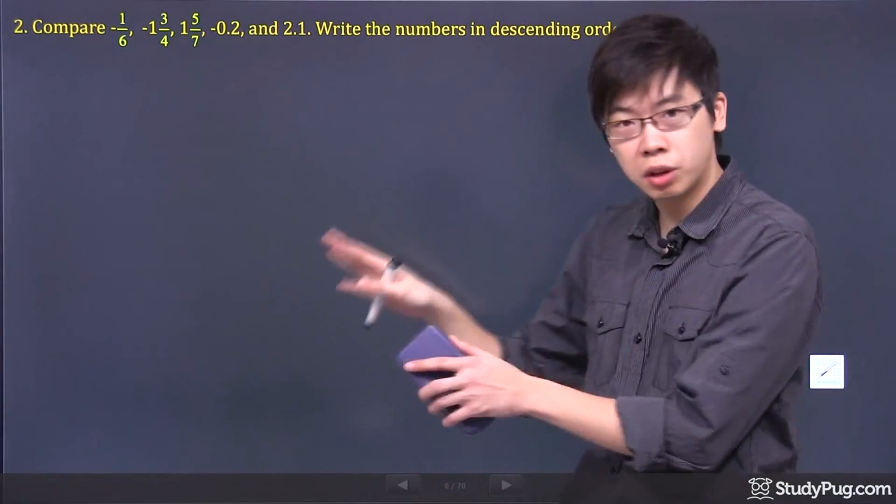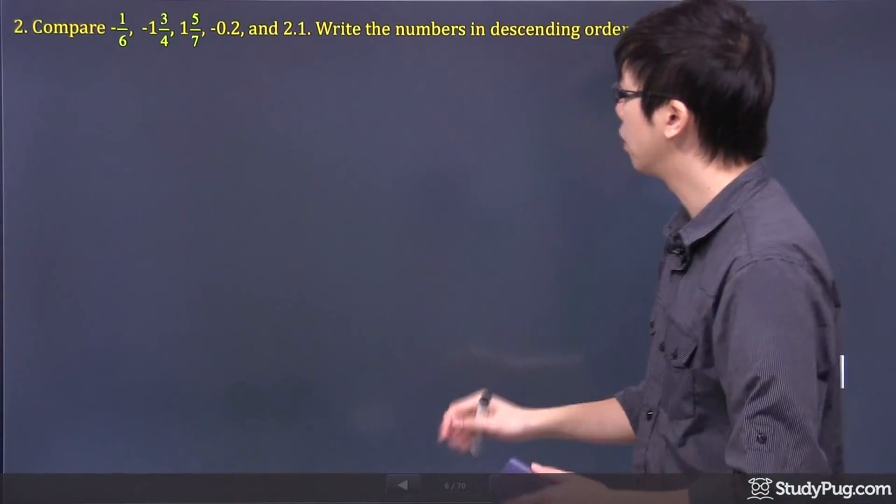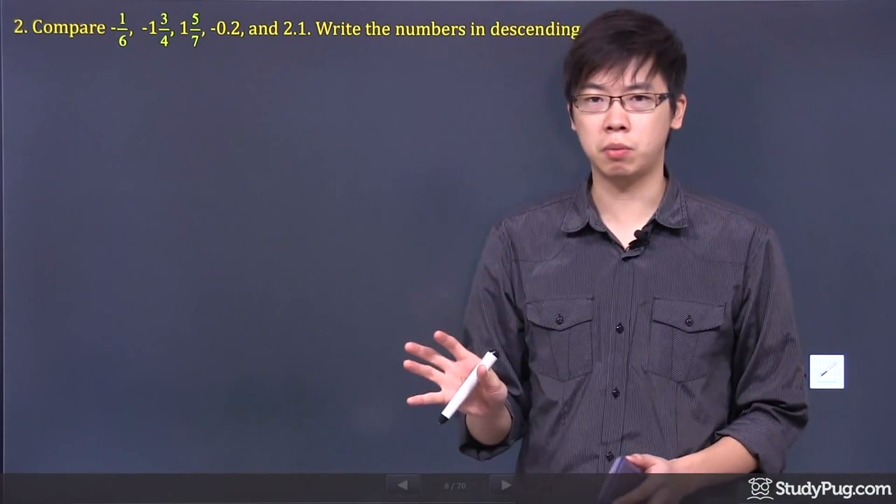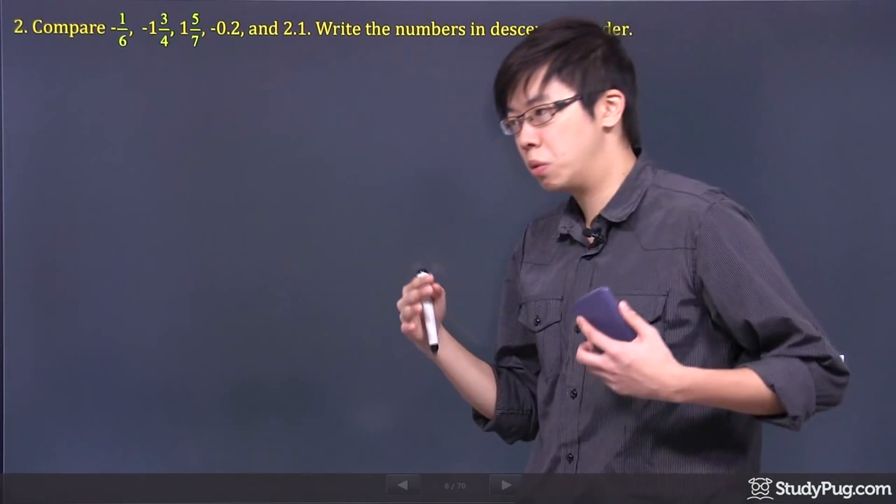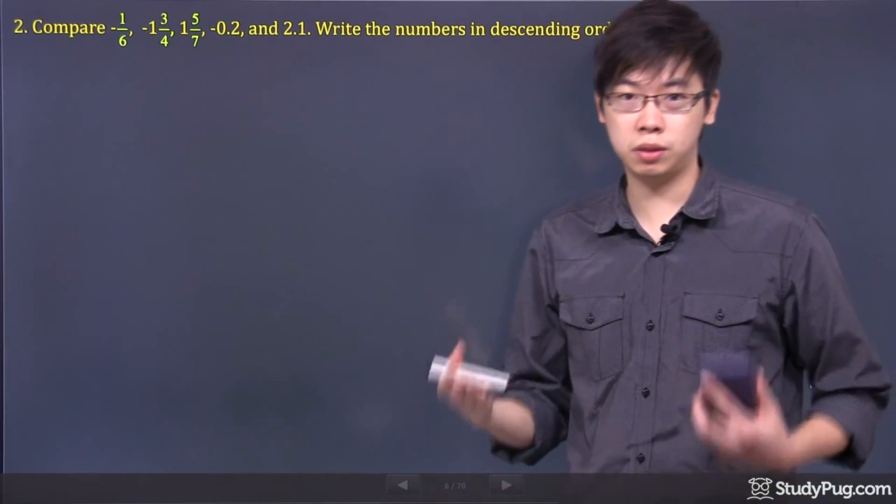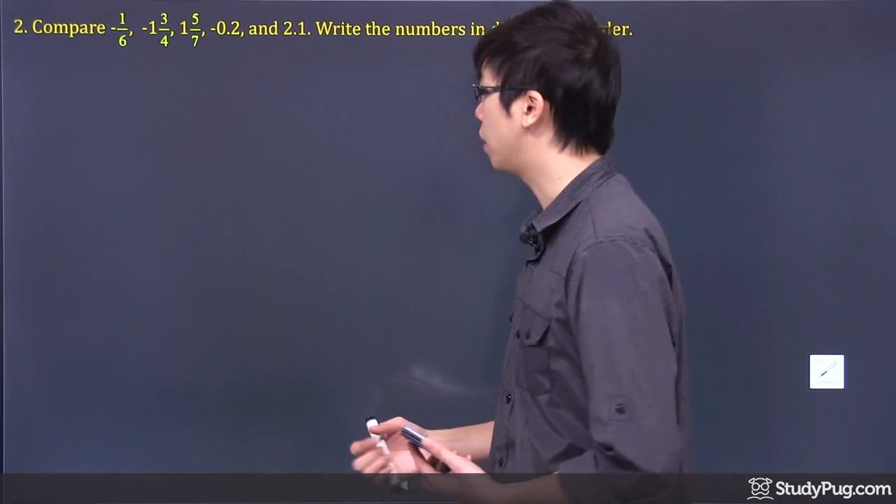That means from the largest number to the smallest number. The best way to compare numbers is when they're in the same format. We've got fractions and decimals, so I would suggest we change everything to decimals because it's easier to see.